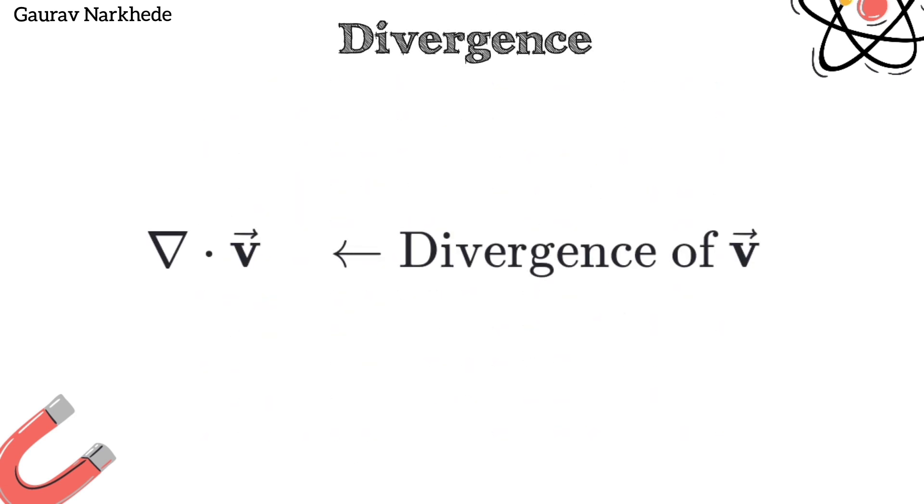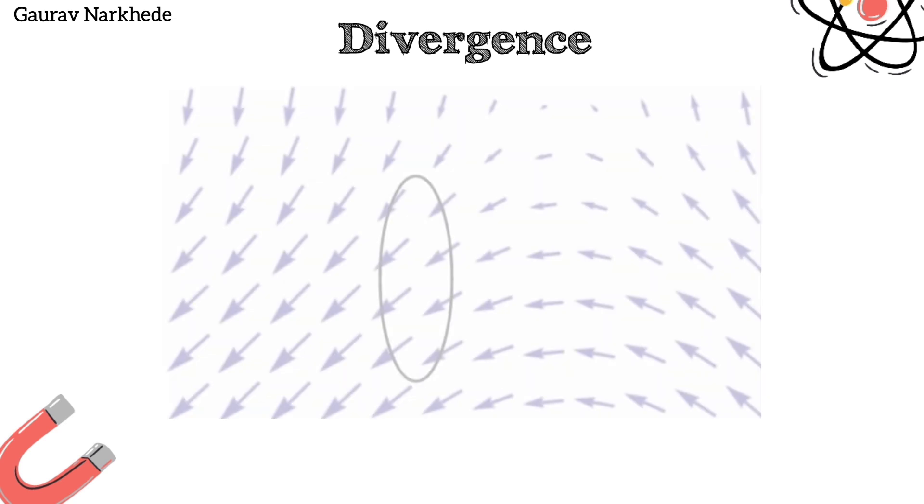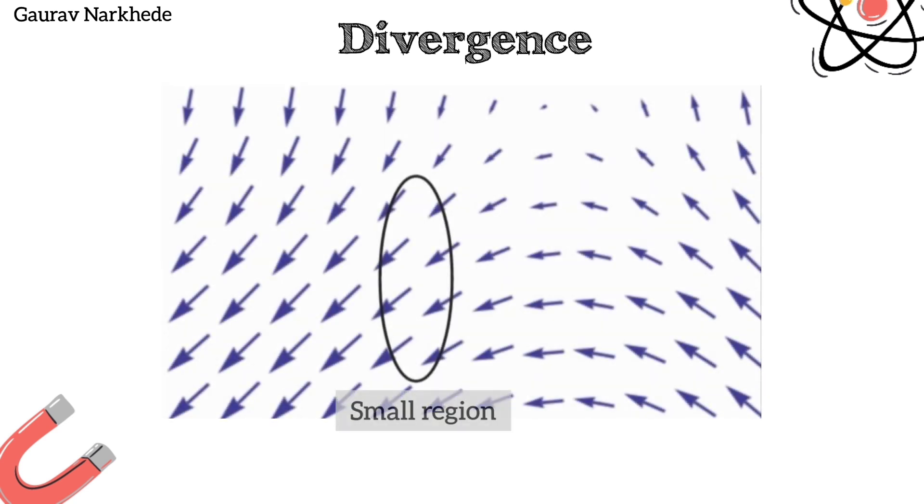Divergence is a vector operator that operates on a vector field. While calculating divergence, we consider a small region within the field and observe the amount of field entering in that region compared to coming out.